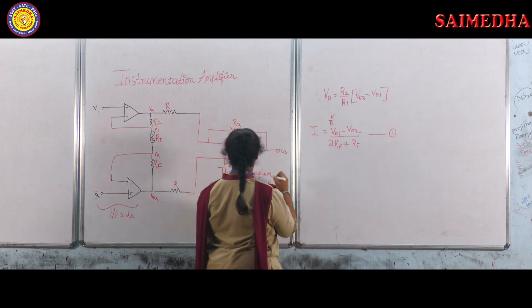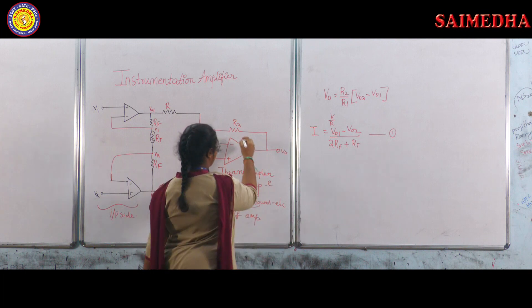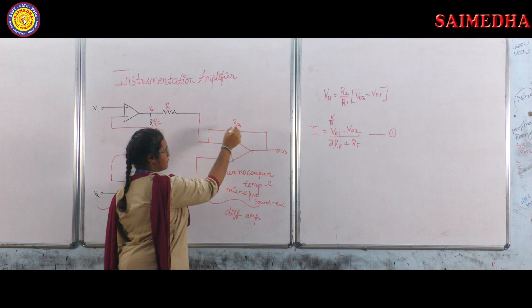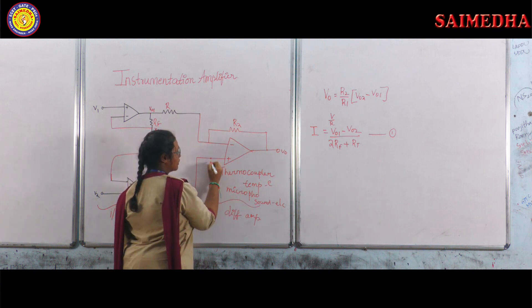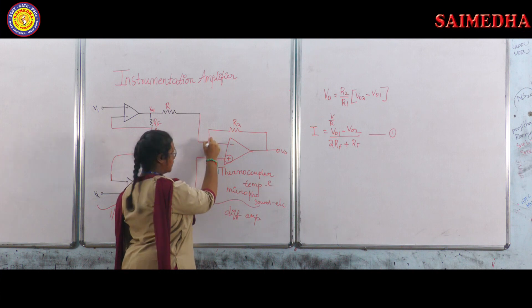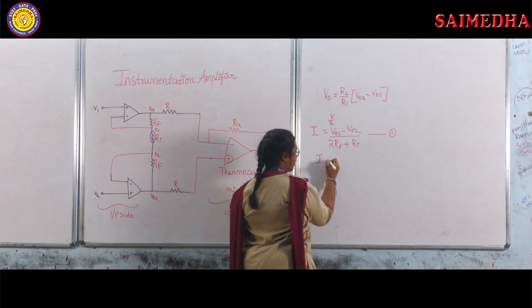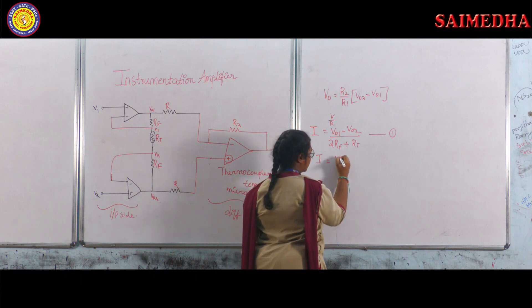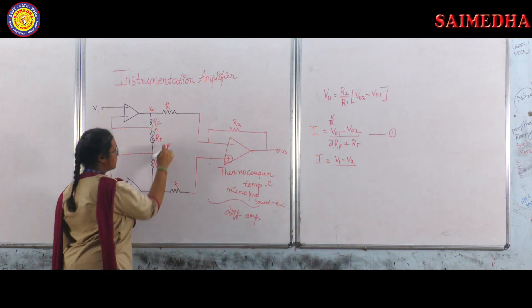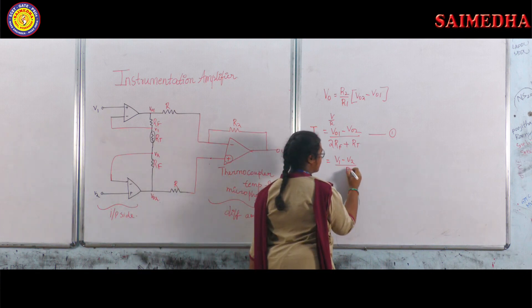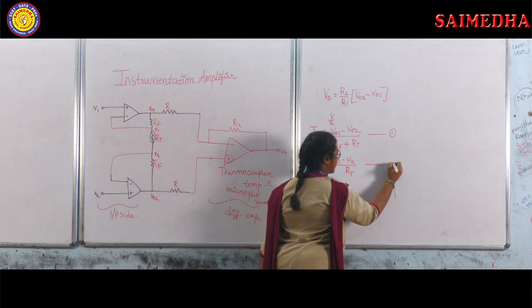Now by using virtual short, because here we are having negative feedback. We know that when there is negative feedback for op amp, then the voltage across the non-inverting terminal will appear at the inverting terminal. So here we will take it as another current that equals V1 minus V2 by RT. This turns up to be the second equation.